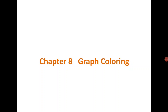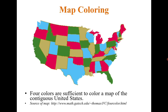Good morning everyone. Today we are going to start a new chapter: graph coloring. If you see this map of the United States, different boxes represent the states. The idea is to color two states such that neighboring states have different colors — for example, these two are neighboring and they have different colors.